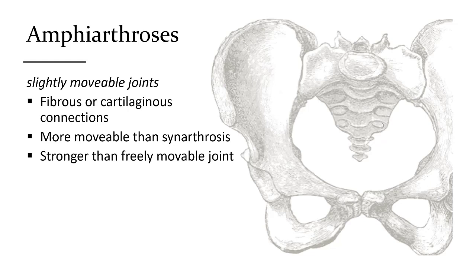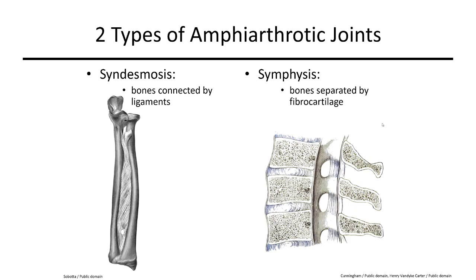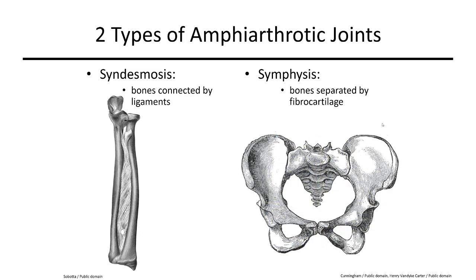Amphiarthrosis are connections with some movement between adjacent bones. One type is syndesmosis, where two bones sit side by side as in the forearm or lower leg, allowing some give to accommodate stresses. Another type is the symphysis, which contains a fibrocartilage connection found along the vertebral column between adjacent vertebrae as well as the anterior pelvis where the two hip bones come together.